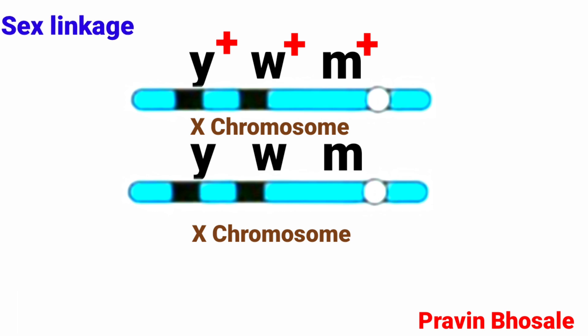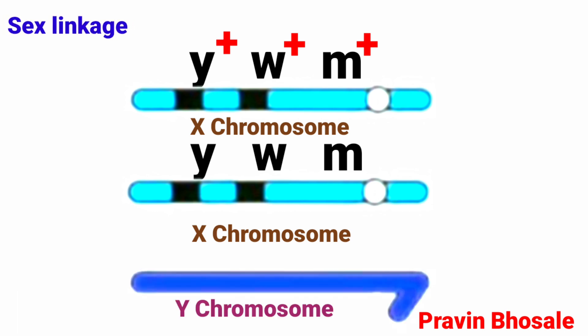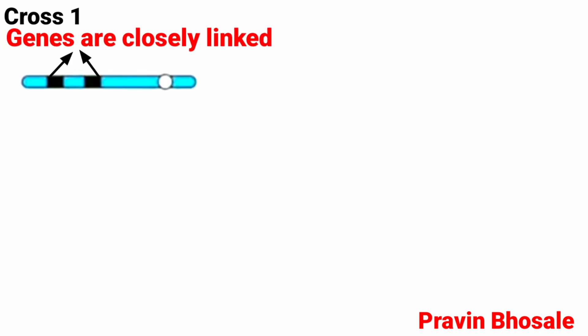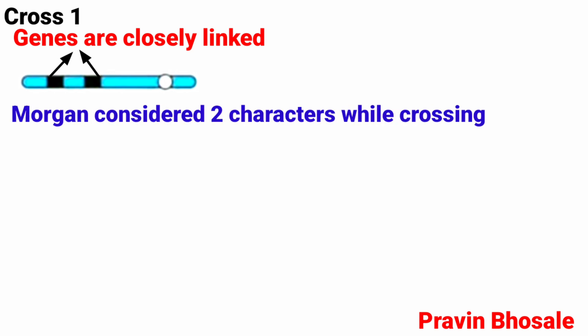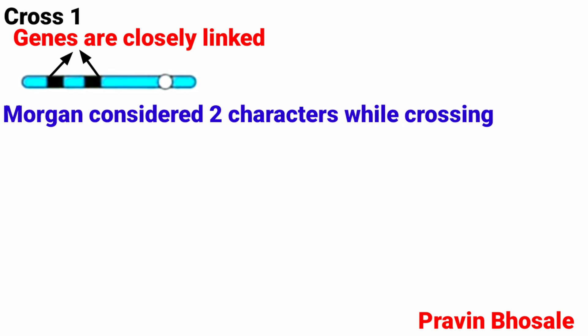This is sex linkage. On the Y chromosome, genes for body color, eye color, and wing size are absent. Let's start with Cross 1. Here genes are closely linked. Morgan considered two characters while crossing: body color and eye color.